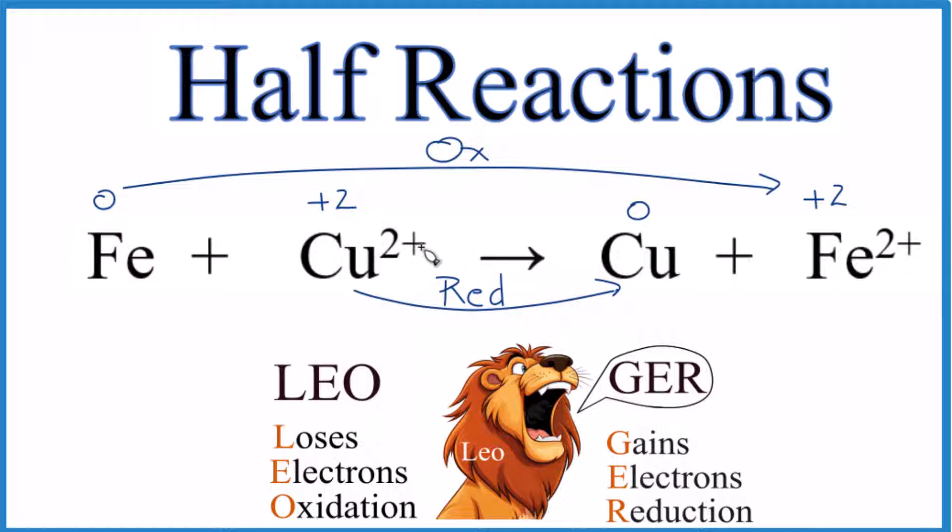Gaining electrons is reduction. Here we got two negative charges, two electrons. So plus two went to zero. This number is smaller, it's reduced.